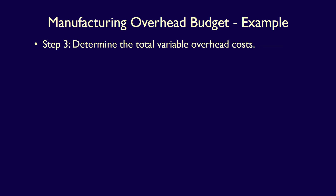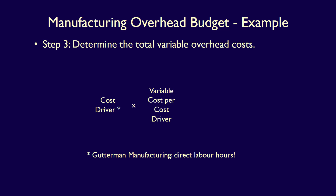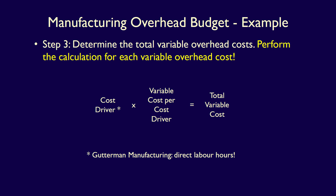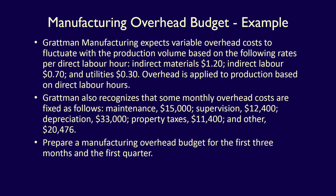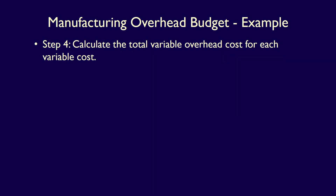Step three is to determine the total variable overhead costs. The formula is: cost driver – for Gratman Manufacturing, direct labour hours – multiplied by the variable cost per cost driver, which equals the total variable cost. We perform this calculation for each variable cost. Returning to the question, the variable overhead costs are indirect materials at $1.20 per direct labour hour, indirect labour at $0.70 per direct labour hour, and utilities at $0.30 per direct labour hour.